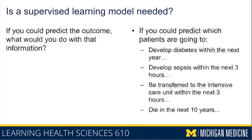What if you could predict which patients were going to die in the next 10 years? There are many commonly available life expectancy models that try to make a prediction like this. One thing you might do with that information is decide who is not in need of preventive screening measures, because for most preventive measures like colonoscopy, you typically only pursue screening when you know a patient is going to live long enough to reap the benefits of that screening.